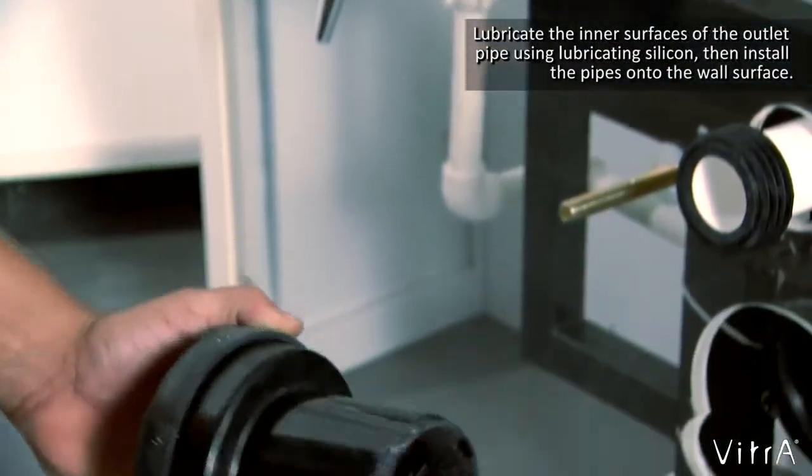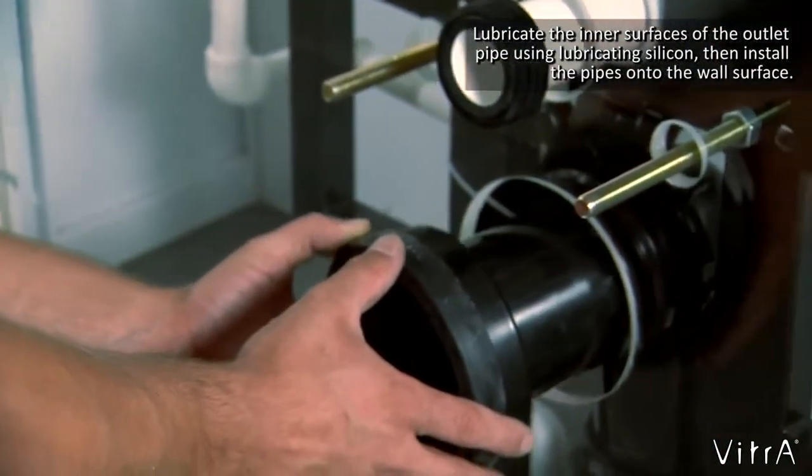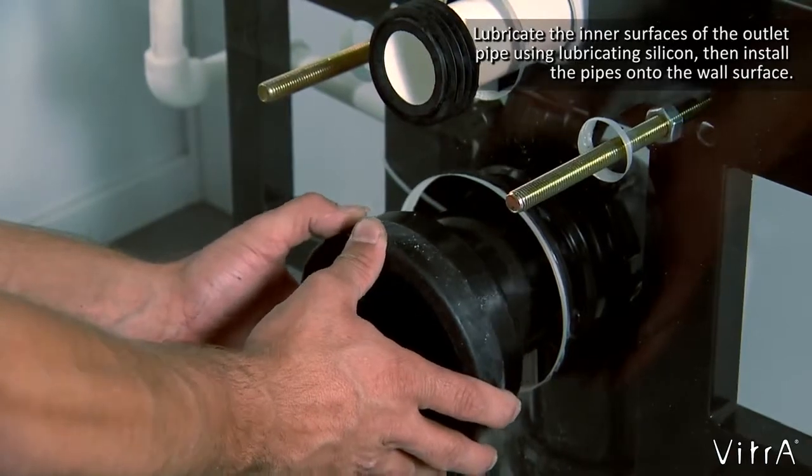Lubricate the inner surfaces of the outlet pipe using lubricating silicone, then install the pipes onto the wall surface.